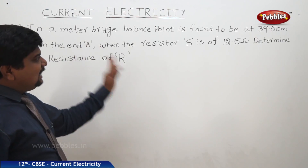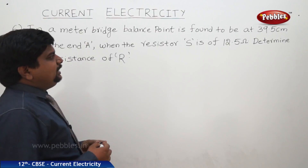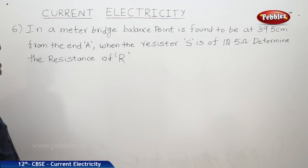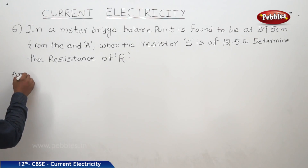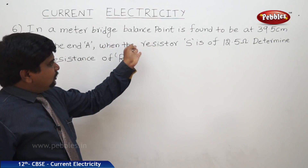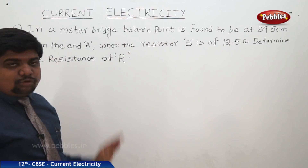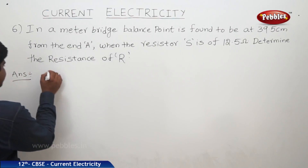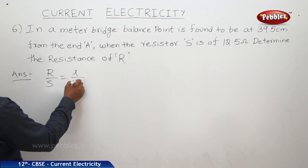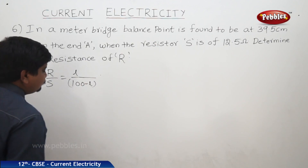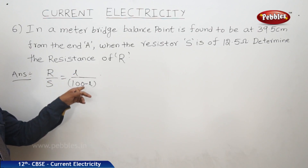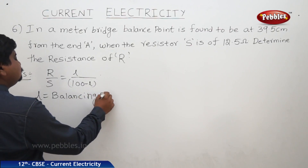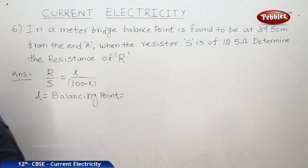Now we'll see a problem based on the balancing length of a meter bridge. In a meter bridge, the balance point is found to be at 39.5 centimeters from end A when the resistor S is 12.5 ohms. We need to determine the resistance R. The balancing length L is 39.5 centimeters.